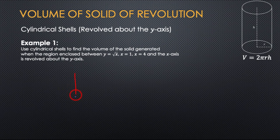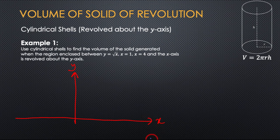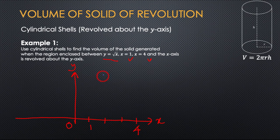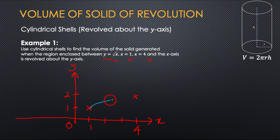This is the y-axis and this is your x-axis. Your function is y = √x from 1 to 4, so you have 1, 2, 3, 4 on the x-axis. If x = 1, y = 1, so it's here. If x = 4, y = 2. So this is your graph.